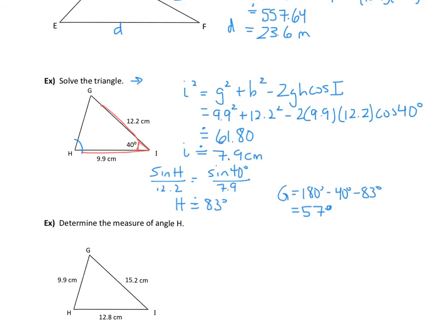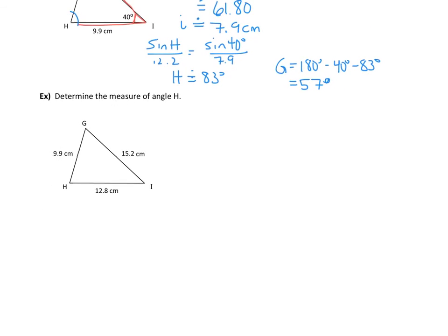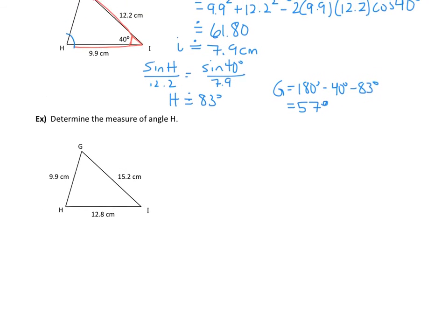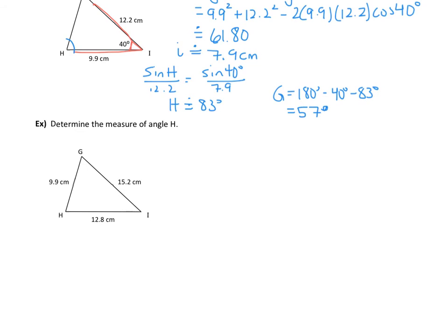Our last example uses the cosine law to determine the measure of angle H. This is the case where all three sides are given and we have to solve for an angle — truly more complicated than finding side lengths. We want angle H: this is side H, this is G, and this is I.